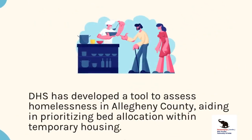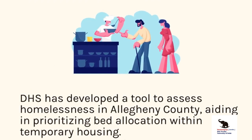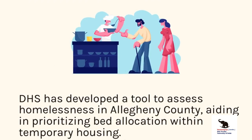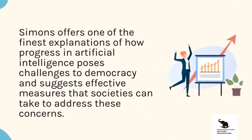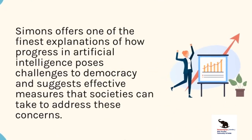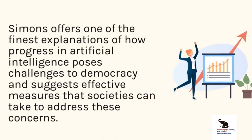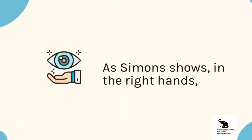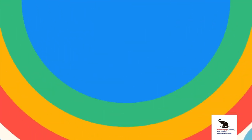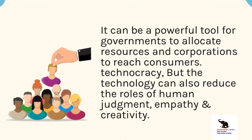DHS has also developed a tool to assess homelessness in Allegheny County, aiding in prioritizing bed allocation within temporary housing. In this significant book, Simons offers one of the finest explanations of how progress in artificial intelligence poses challenges to democracy and suggests effective measures that societies can take to address these concerns. As Simons shows, in the right hands, it can be a powerful tool for governments to allocate resources and for corporations to reach consumers.